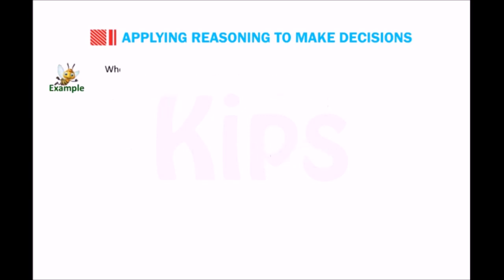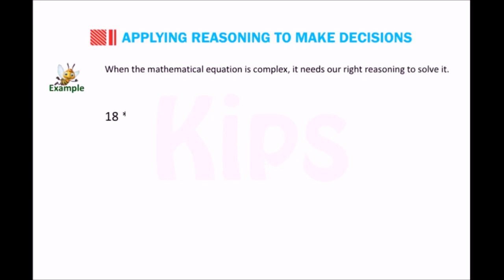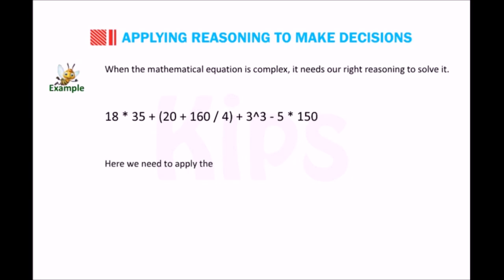When the mathematical equation is complex, it needs our right reasoning to solve it. For example: 8 × 35 + 20 + 160 ÷ 4 + 3³ − 5 × 150. Here we need to apply the BODMAS rule to give the correct solution.